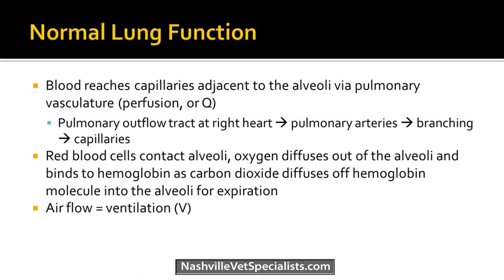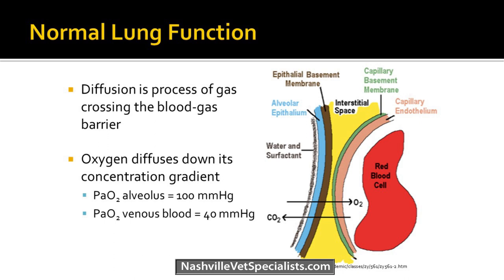That process of airflow is called ventilation, or V. We also have diffusion, where gas crosses the blood-gas barrier — oxygen diffuses down its concentration gradient. Oxygen in the alveoli is 100 mmHg, and in the venous blood it's 40, so it leaves the alveolus and goes into the red blood cell. It passes through water, surfactant, epithelium, and the interstitial space. When there's significant lung damage, these layers can be destroyed or filled, which is where a lot of significant respiratory disease occurs.